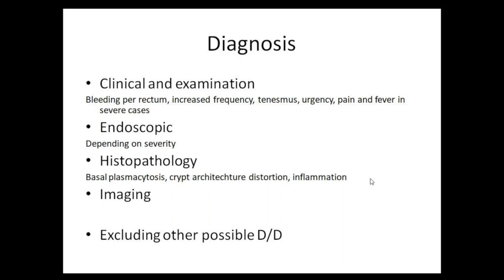When ulcerative colitis is suspected, sigmoidoscopy or ileo-colonoscopy must be done. Early endoscopic findings include mucosal edema, loss of vascular pattern, and nodularity. In severe cases, there will be erythema, friability, and the mucosa bleeds even on touch or spontaneously. Endoscopy must be supported by histopathology because the most important differential diagnoses to rule out are CMV colitis and Clostridioides difficile colitis.